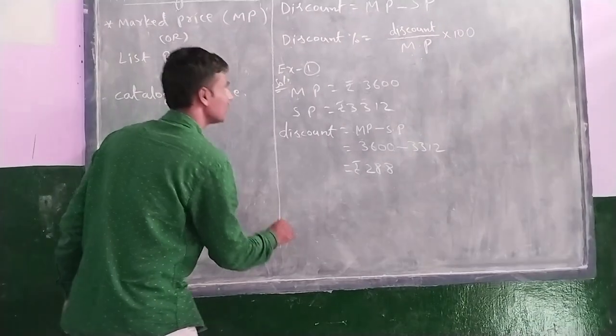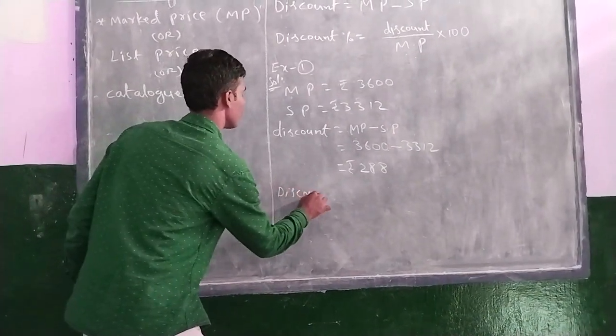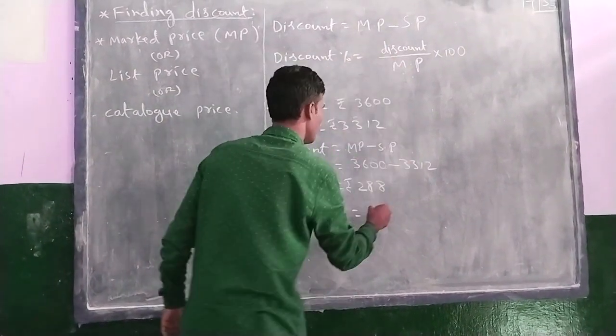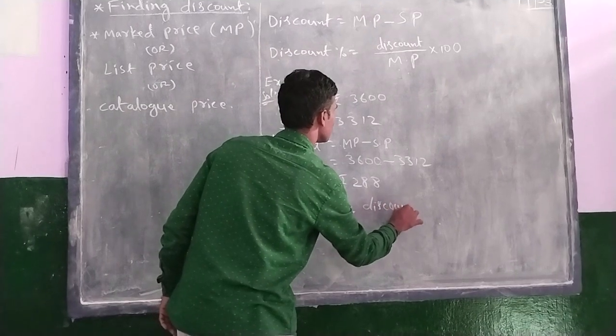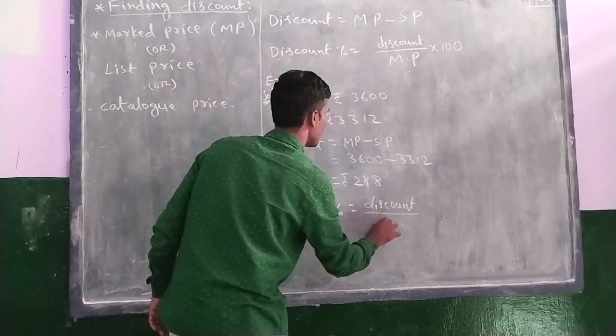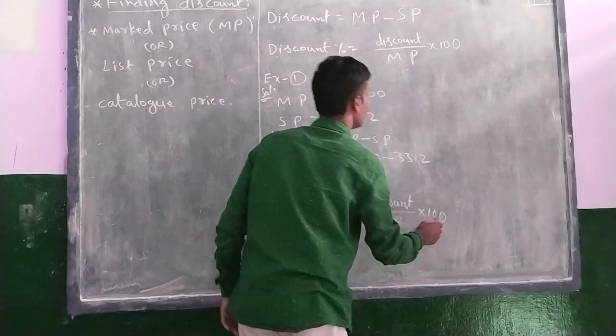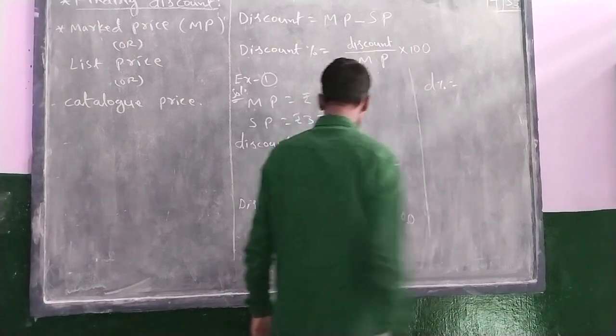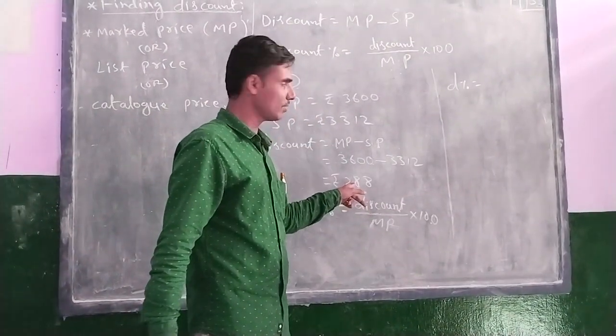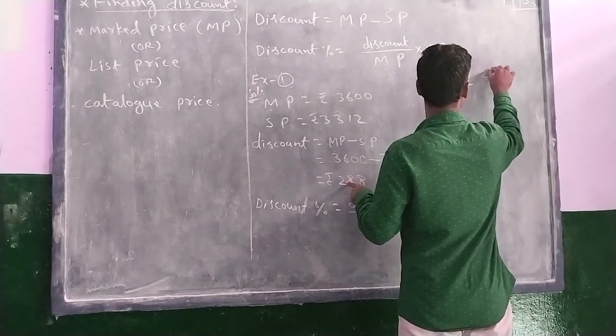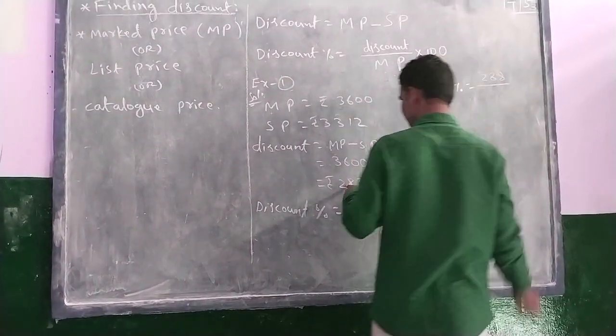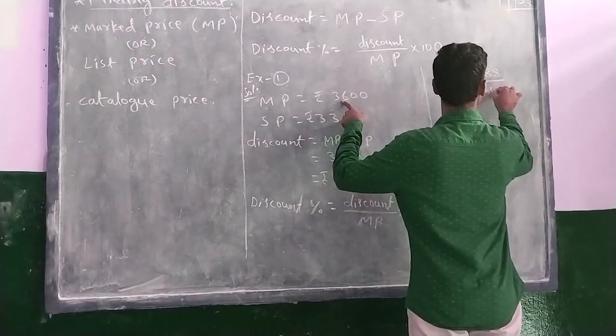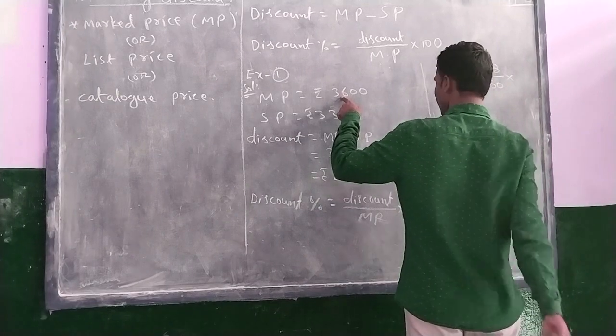Discount to percentage. Discount to percentage equal to formula here on the table. Discount divided by marked price, marked price into 100. Okay. Now here, discount to percentage equal to, so discount equal to how much you got here? 288 divided by marked price. MP equal to how much is it? 3,600. 3,600 into 100.